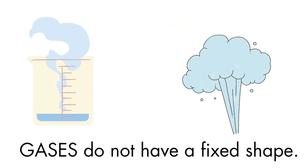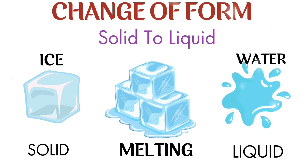Changes of form. How does a solid change to a liquid? The process by which a solid changes into a liquid form is called melting. For example, ice changes into water — ice is a solid and water is a liquid.